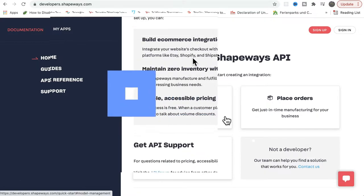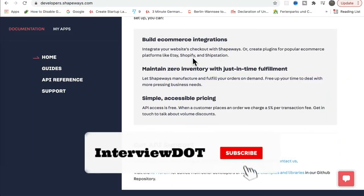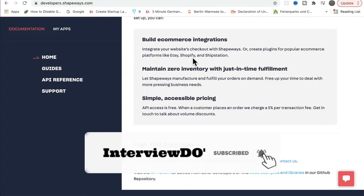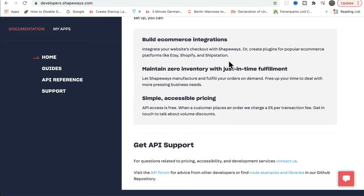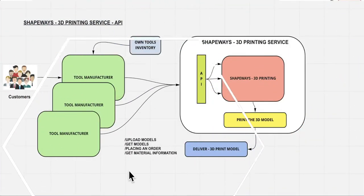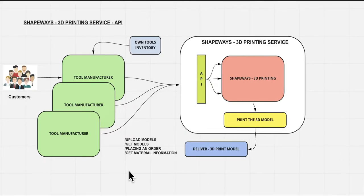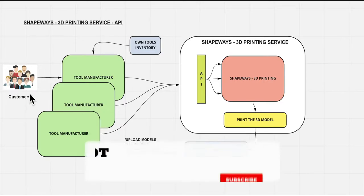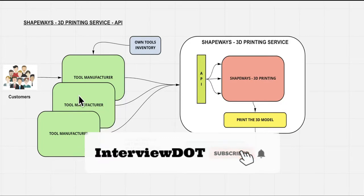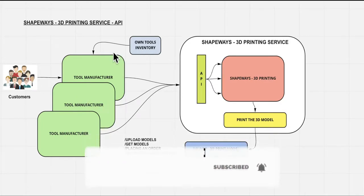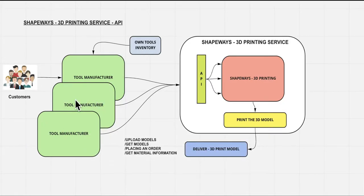To give you an example, say you have an e-commerce website and you want to integrate with Shapebase — it is possible using Shapebase APIs. Now let's see at a high level how we can integrate with the Shapebase API. Say for example I have a company where we sell tools, different types of manufacturing tools. Customers can come to our website, choose a tool, and from our inventory we will be delivering to the customer. In some cases, we don't have some tools in our inventory, but we can get it printed using Shapebase.